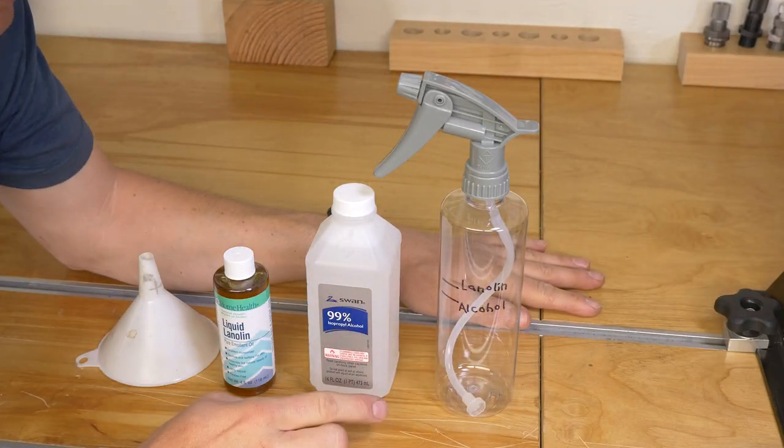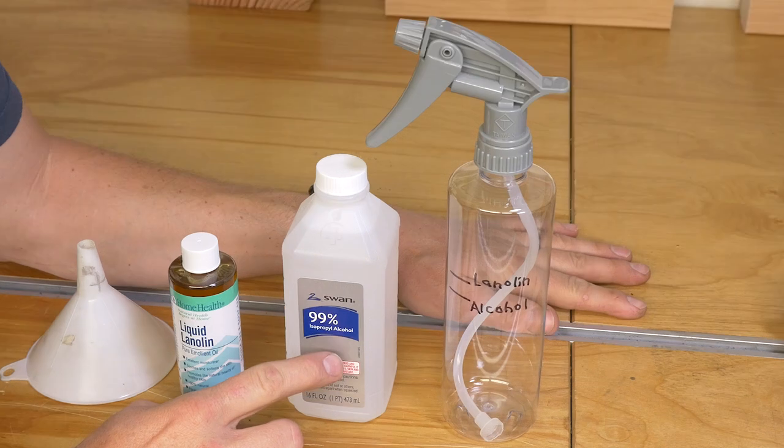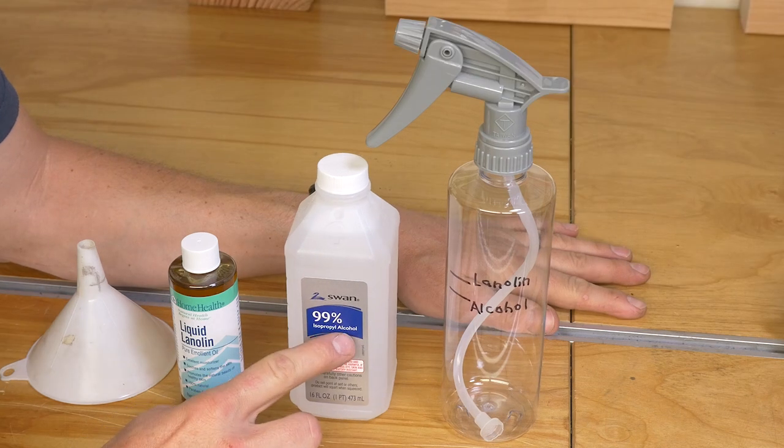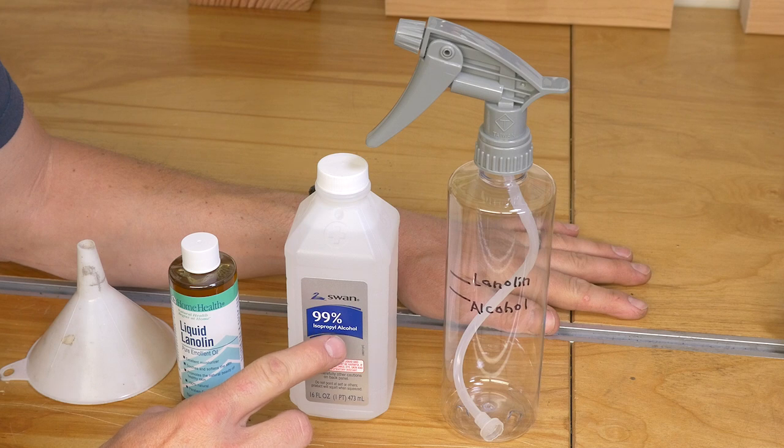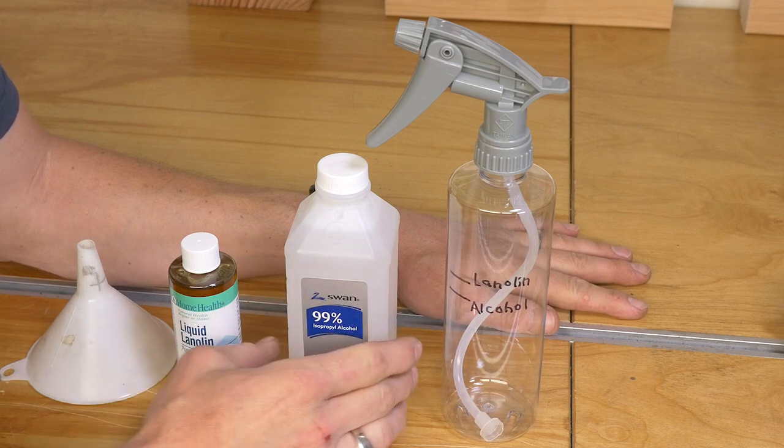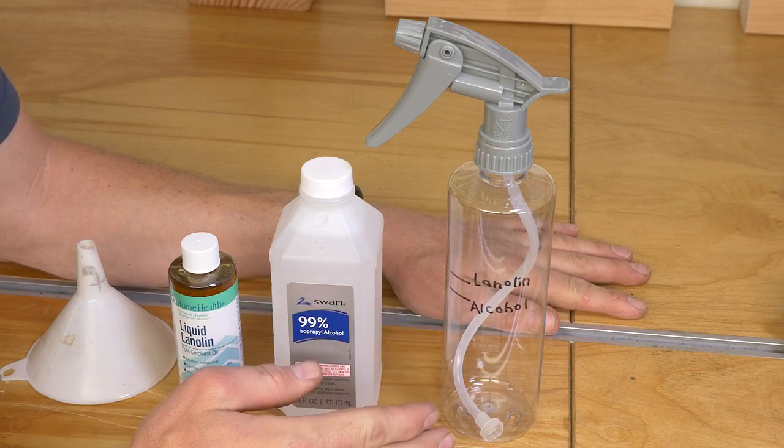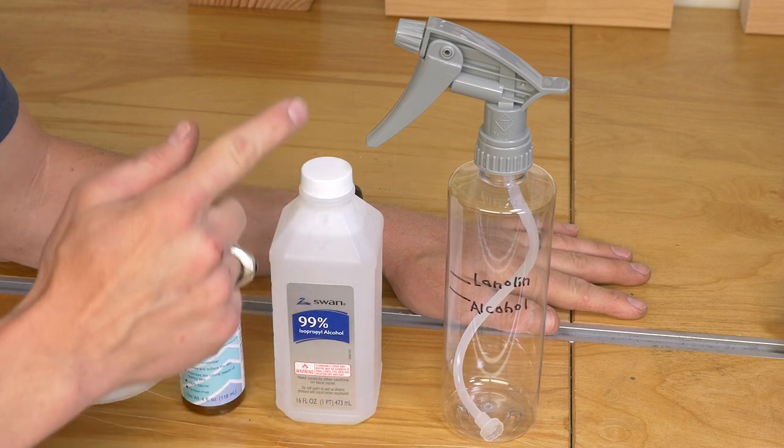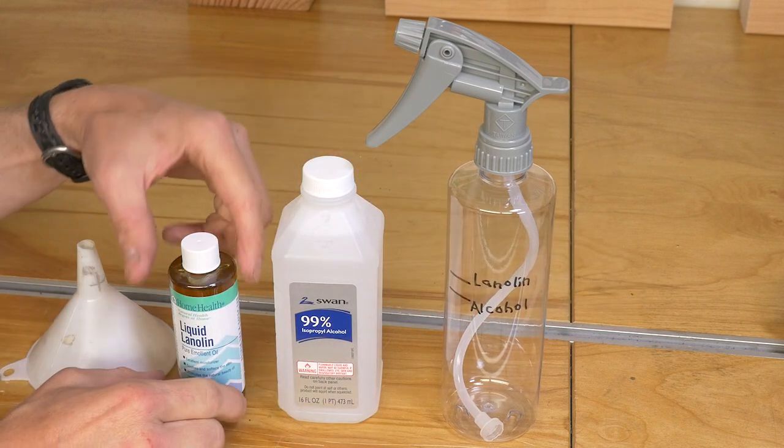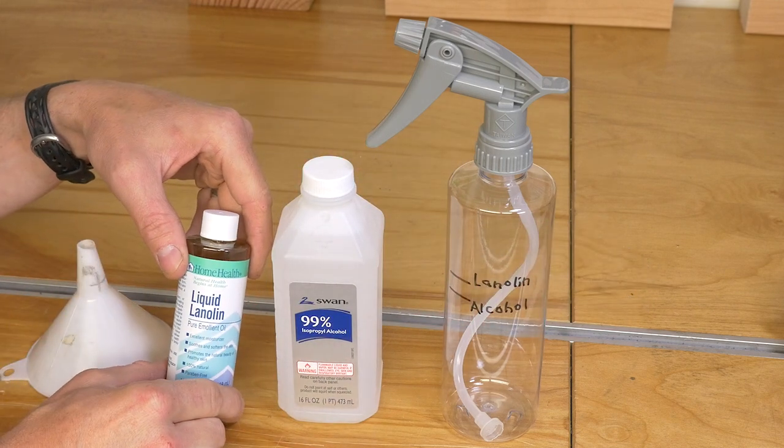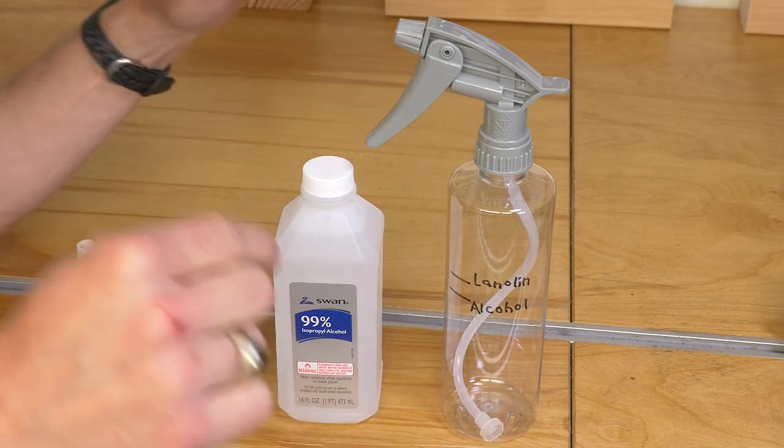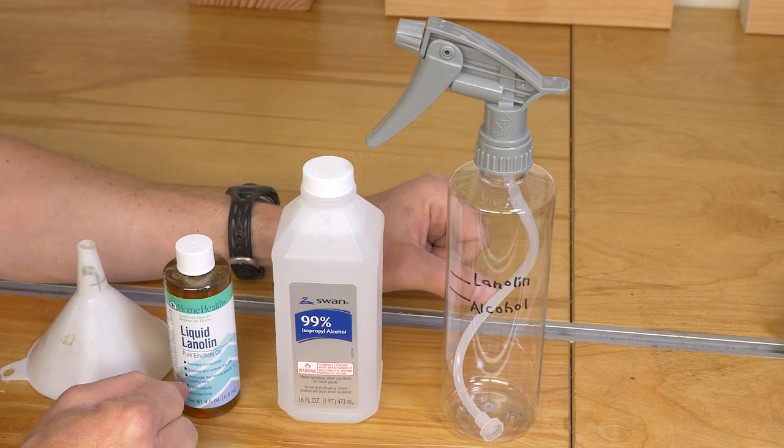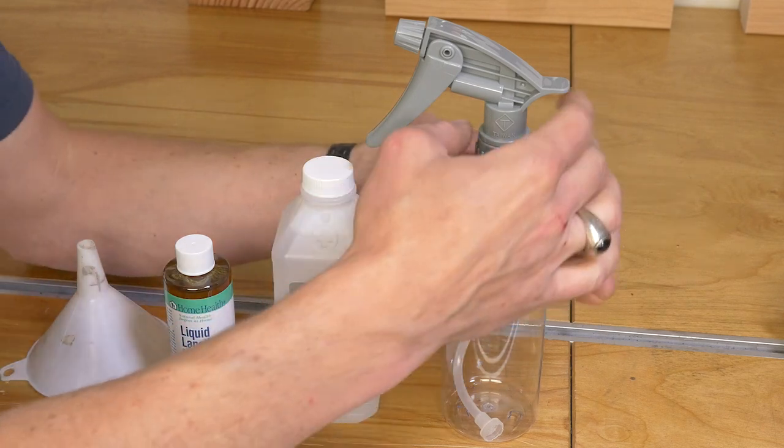So here's how simple it is. All we need is a 10 to 1 ratio: 10 parts 99% isopropyl alcohol. It's important to get 99% because if you get 70% or something like that, you've got a lot of water in there that you don't need. It's not going to dry as quickly. This alcohol is going to flash off super quick. The actual lubrication comes from the liquid lanolin. Don't worry, in my full write-up, just see the video description, I have links to all of the products so you can make this lube yourself.